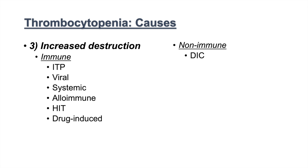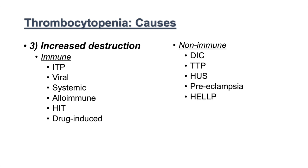Non-immune causes of increased destruction include DIC — disseminated intravascular coagulation — where fibrin clots form inappropriately, causing a microangiopathic hemolytic anemia and increased platelet destruction. TTP and HUS (hemolytic uremic syndrome) also fall into the MAHA category. Preeclampsia can lead to non-immune platelet destruction, as can HELLP syndrome, which is a worsening of preeclampsia. APS (antiphospholipid antibody syndrome) can also increase destruction of thrombocytes in a non-immune-mediated fashion.